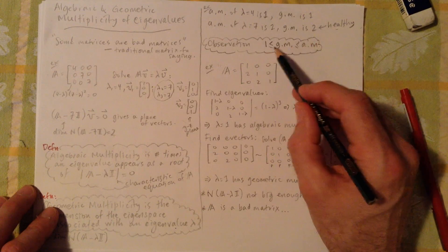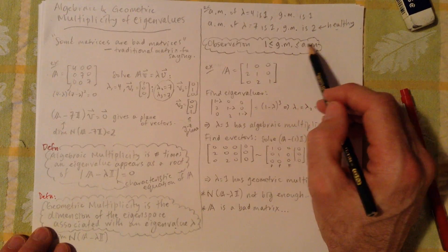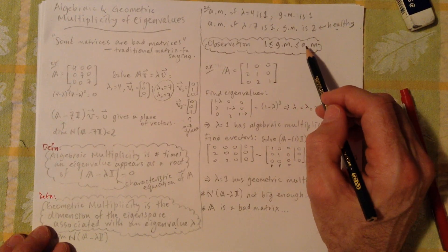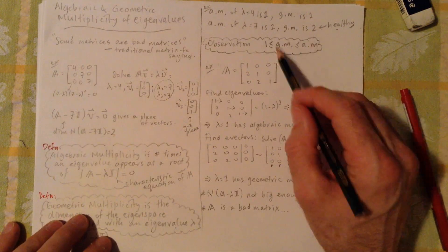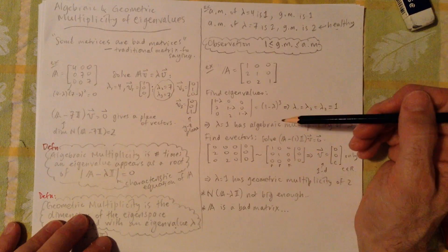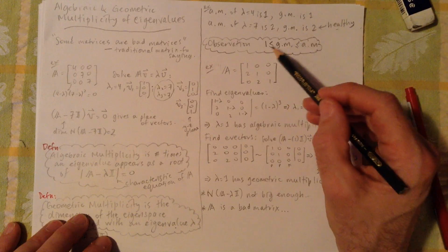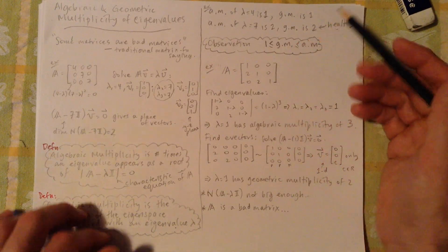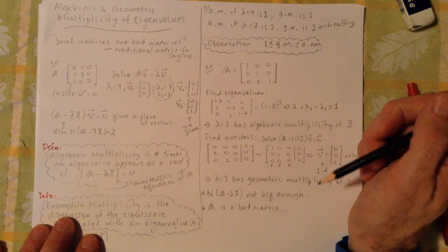So the observation is that geometric multiplicity has to be less than algebraic multiplicity, right? The space adds up. There are only n dimensions, so we can't overflow that. And it has to be at least one, right? There's at least one eigen direction associated with an eigenvalue.